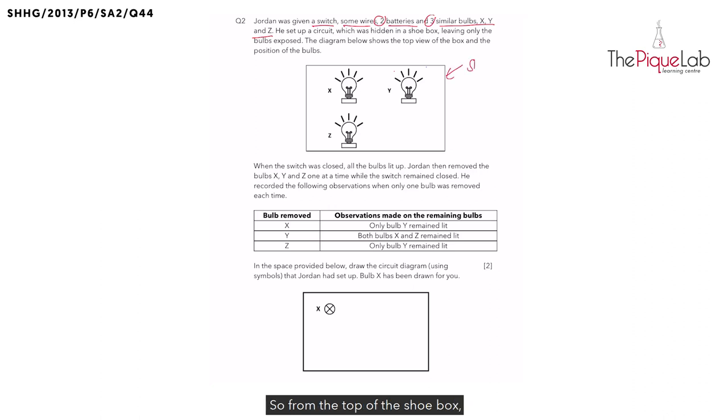So from the top of the shoebox, you can only see the three bulbs and they're supposed to predict how these bulbs are connected by wires. To help us do that, Jordan removed one bulb at a time and he recorded which bulbs remained in this table here.